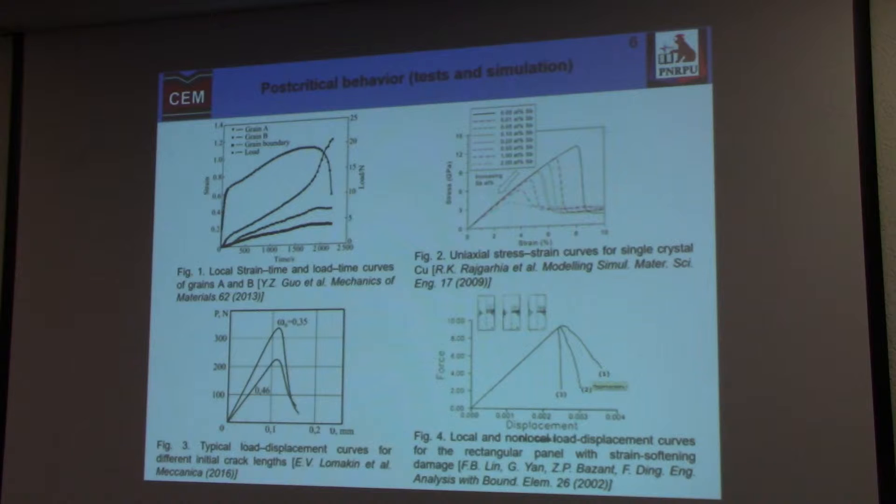In each mechanical process, we can find some critical state. For example, in mechanical tests, it corresponds to maximum load of the test. After this point, we have a post-critical behavior of material.